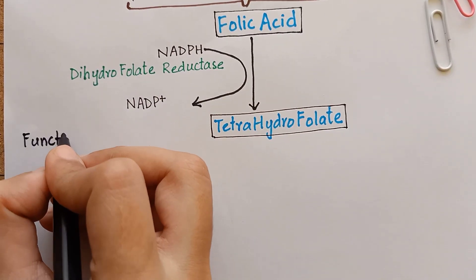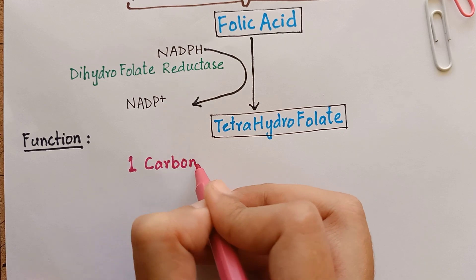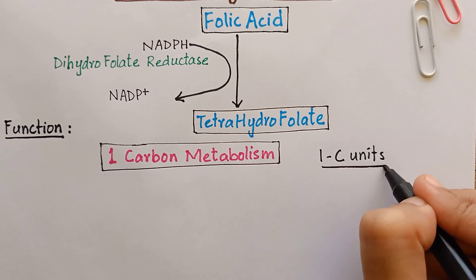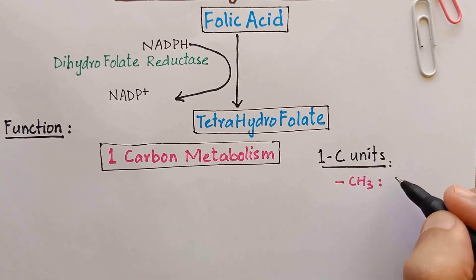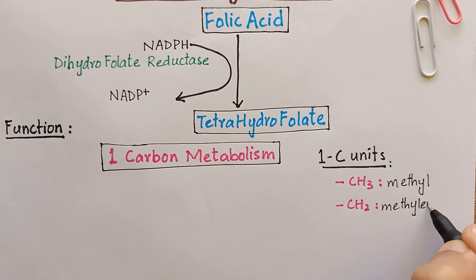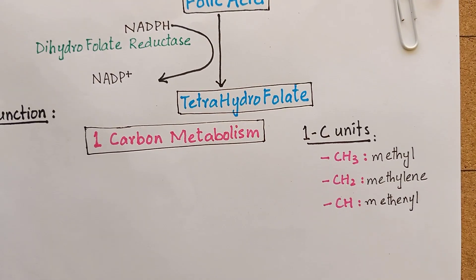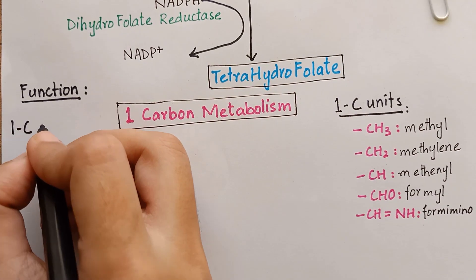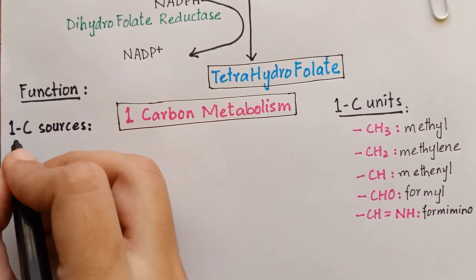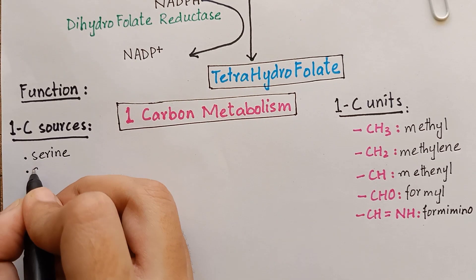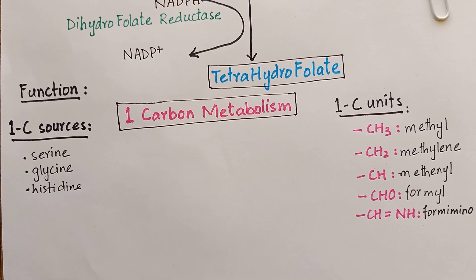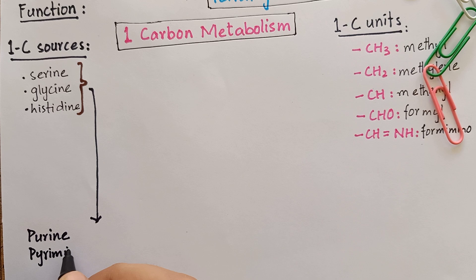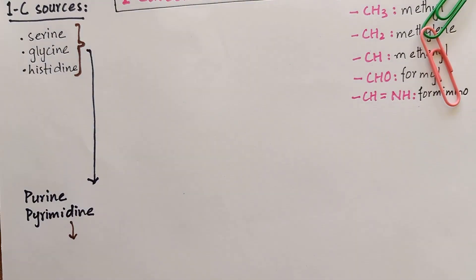Folic acid or folate plays a key role in one carbon metabolism, which is essential for biosynthesis of several compounds. The one carbon unit can be a methyl group, methylene group, methenyl group, formyl group, or a formamino group. Tetrahydrofolate receives one carbon fragments from donor sources such as serine, glycine, and histidine, and transfers them to intermediates such as purines and pyrimidines that are required in the synthesis of nucleic acids.